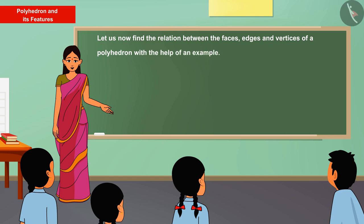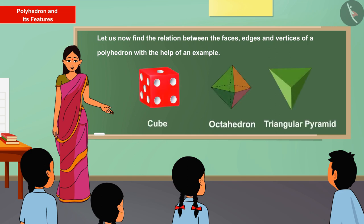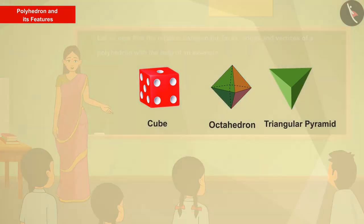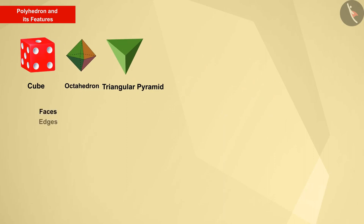The teacher is conducting an activity for the children of class 8. She gives these polyhedrons to Raju, Moon and Payal respectively. The number of faces, edges and vertices are shown with F, E and V respectively. Can you help Raju, Moon and Payal fill this table?